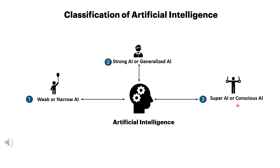This means that ASI can do anything that humans can do, but better. For example, an ASI system could invent new technologies, solve global problems, and create new forms of art, all without human guidance.